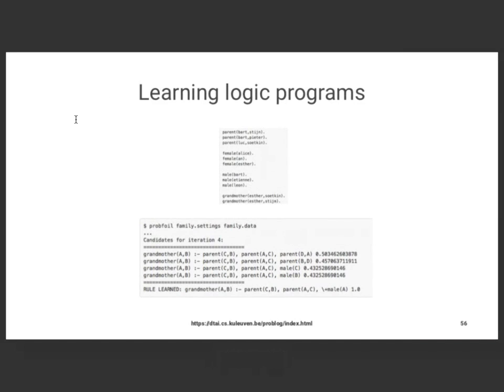I discussed one kind of structure learning, but there's a very different kind. Inductive logic programming (ILP) is one of the paradigms for learning structure. Imagine you have data points — for instance, 'Bob is a parent of Stile,' 'Bob is a parent of Peter,' individuals who are female or male, and 'Esther is the grandmother of Sotkin.' What I want to understand from these data points is what kind of rule triggers the grandmother relation.